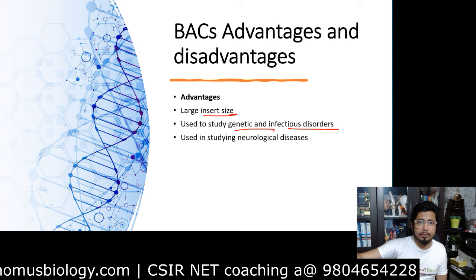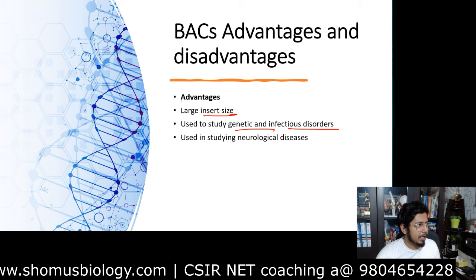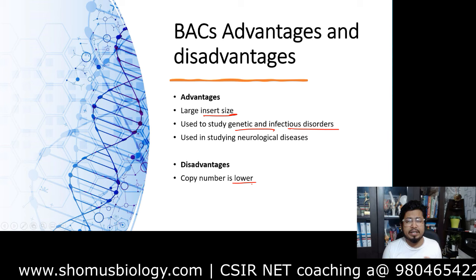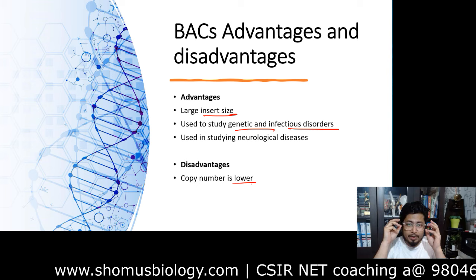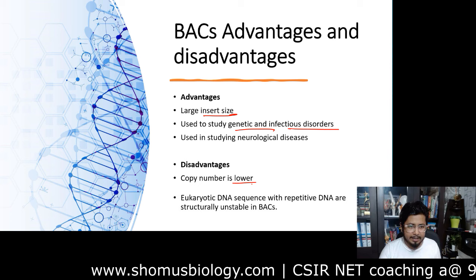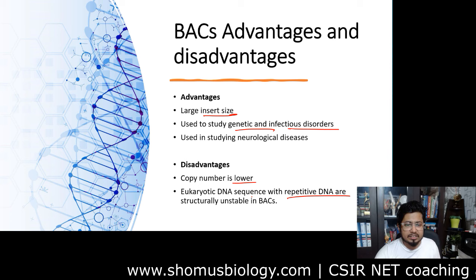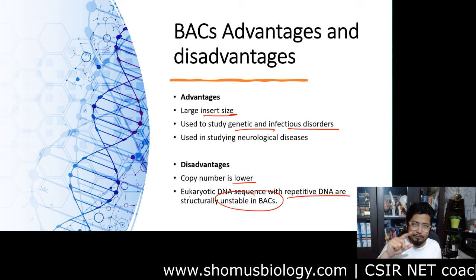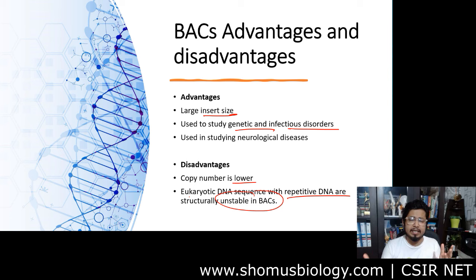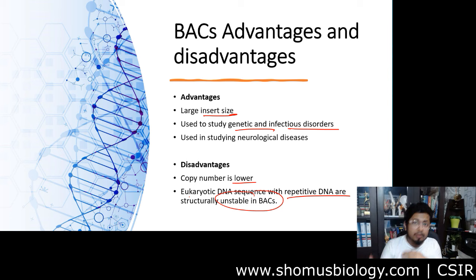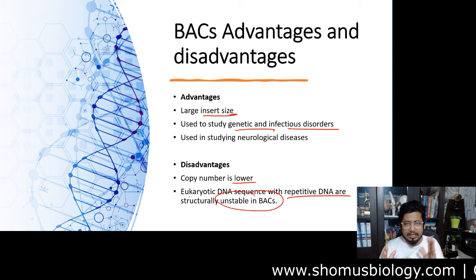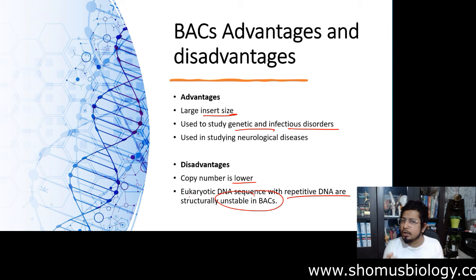The disadvantages of BAC include a very low copy number — unlike plasmids which can reach 500–600 copies per cell, the BAC copy number is highly restricted. Additionally, eukaryotic DNA sequences with repetitive DNA are structurally unstable in BAC. The non-coding regions of eukaryotic genomes are repetitive, so those portions are less stable in BAC and harder to clone reliably.